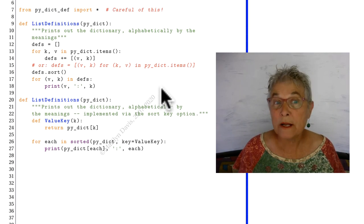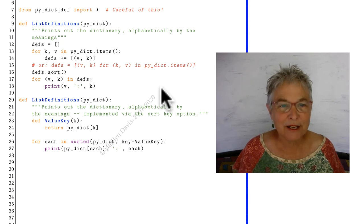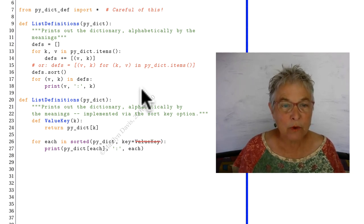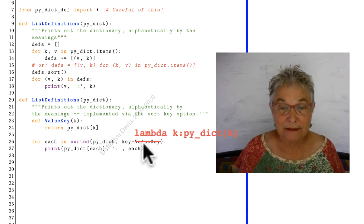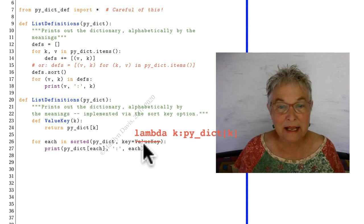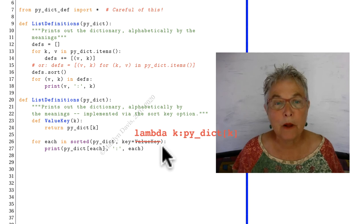There is one other variation that I didn't put here, and that would be to use the lambda. That would happen here. Key equals lambda. And then I'd say when a key comes in, what goes out is the value. So there's another variation. All good.